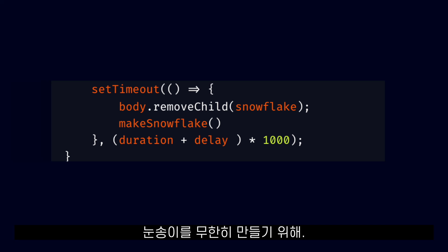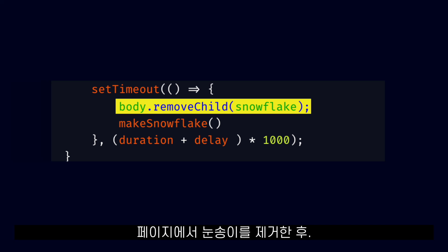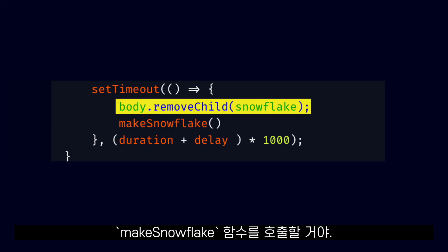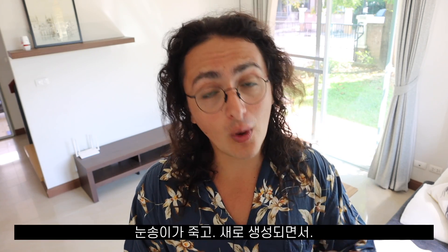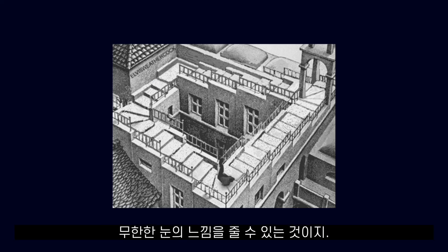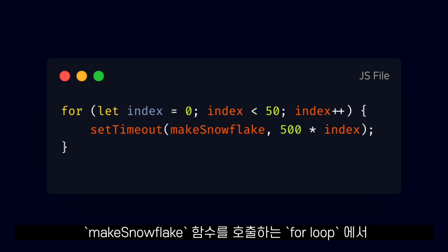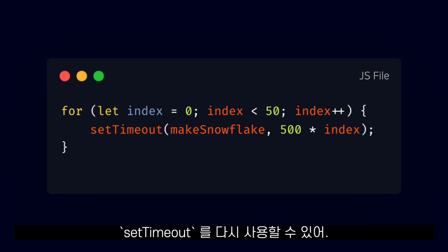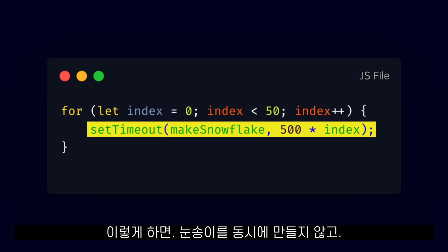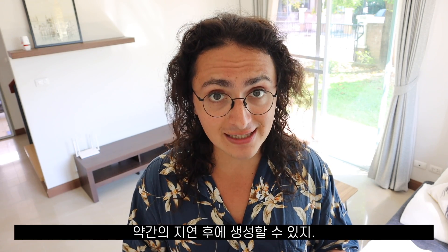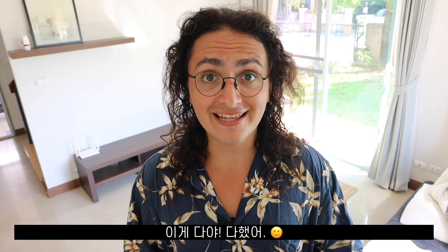To make our snowflakes infinite, just after we remove the snowflake from the page, we will call the makeSnowflake function again. This way, when one snowflake dies, another one is created, giving us infinite snow. To make everything feel even more natural, in the for loop that calls makeSnowflake the first time — 50 times — we can use setTimeout again to not create all snowflakes at once, and instead create them after a tiny delay. And that's it. We are done.